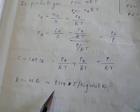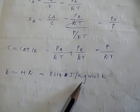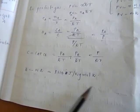The universal gas constant is equal to 8314 joule per kilogram mole Kelvin or 8.314 kilojoule per kilogram mole Kelvin.